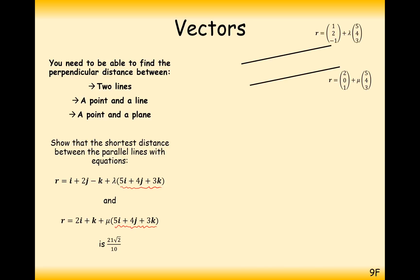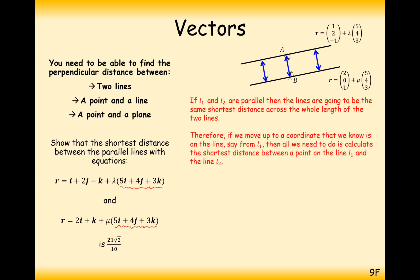So what are we doing here effectively? We've got two parallel lines and we want to find the points A and B. Well, we don't need to find those points, but we need to find this blue shortest distance from here. So the way that we're going to approach this is if L1 and L2 are parallel, then the lines are always going to be the same shortest distance across the whole length of the two lines. So for example, we can use any point along this line to find the shortest distance.